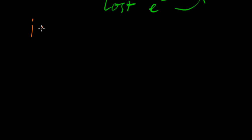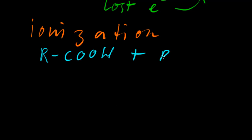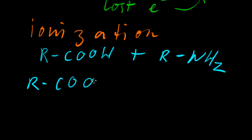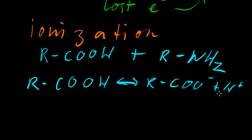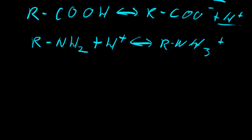Ions are created in a process called ionization. Ionization can happen in single atoms or in atoms within a molecule. So, I'll just do a brief example. If we had a carboxyl group and we had an amino group, we would see this — plus a hydrogen ion. And then here, plus the hydrogen ion, we would get NH3+. So, that's an example of ionization.